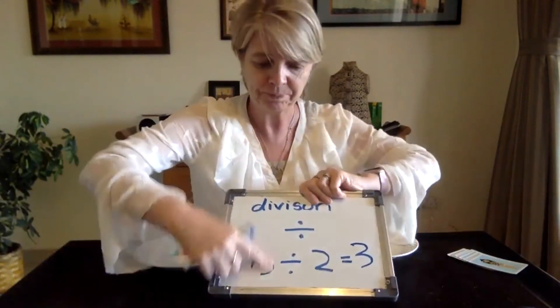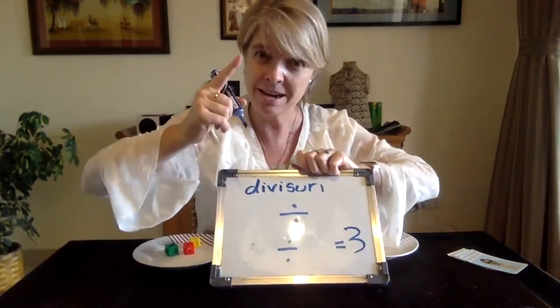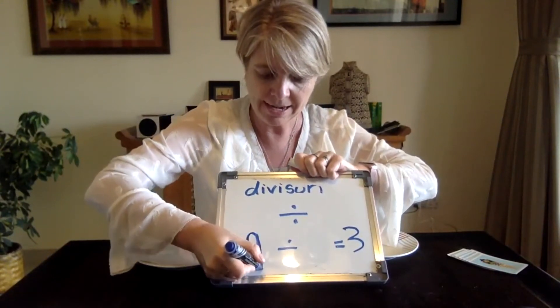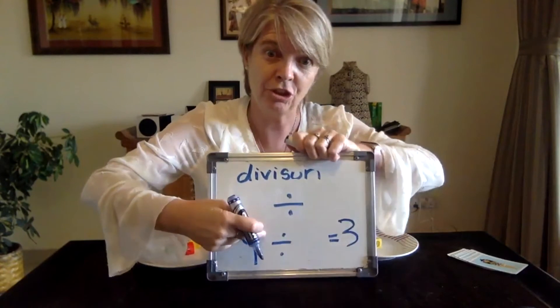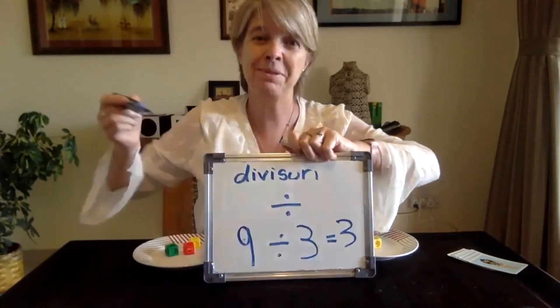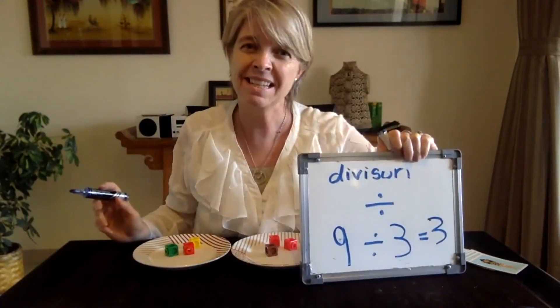So I know that I have nine to start with, remember? Nine divided, or shared out, between three equals three. Is that super easy? Yeah.